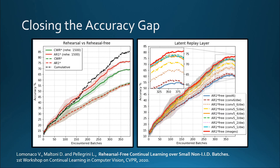Results. We studied the impact of both pure replay and latent replay on existing algorithms that already performed decently on the 391-batch realistic scenario without replay. On the left, we show how the pure non-latent replay mechanism can boost accuracy results. For the CWR* algorithm in green, with just 1500 replay patterns we have an accuracy jump of about 15%, while for AR1*, the evolution of CWR*, the boost is about 20%. The difference is that CWR* only works on the last layer, while AR1* also manages adaptation at the lower layers of the model.